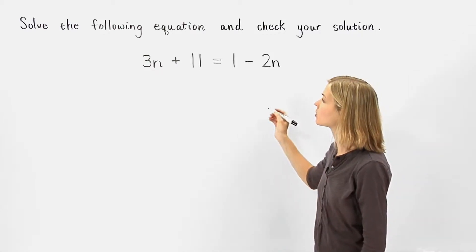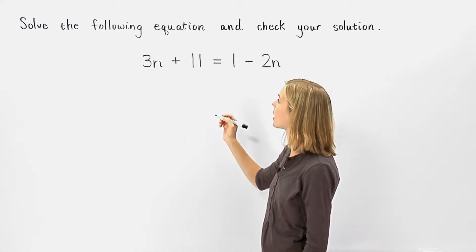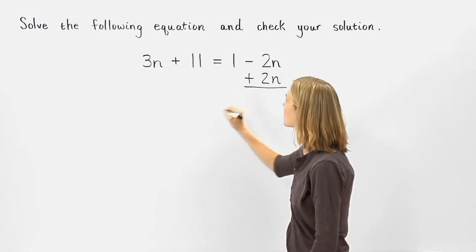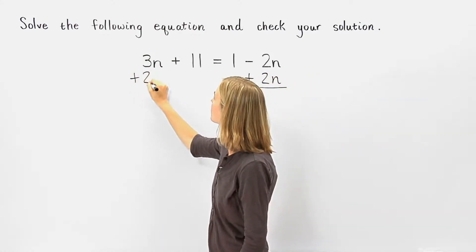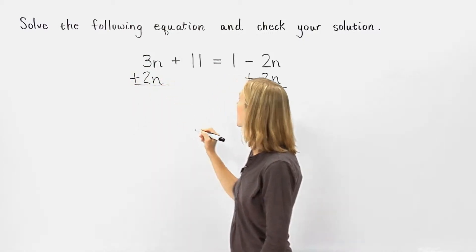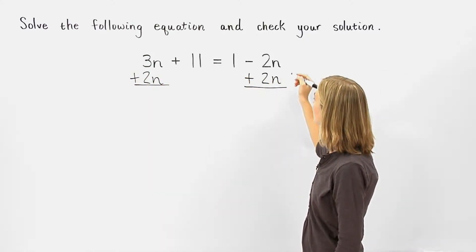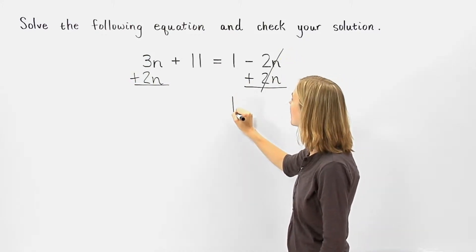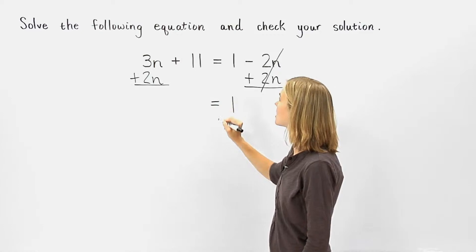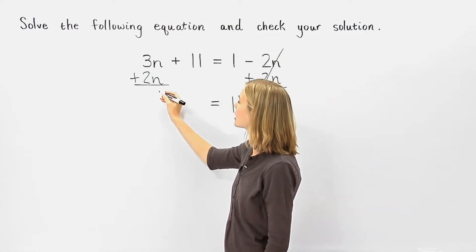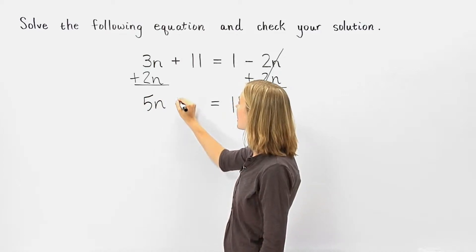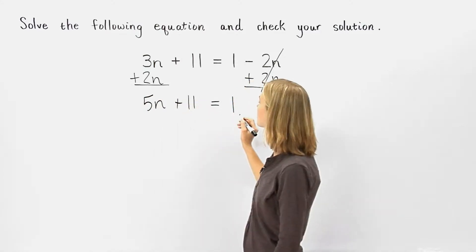So let's put our variables together on the left side of the equation by adding 2n to both sides of the equation. On the right side of the equation, the negative 2n and positive 2n cancel each other out and we have 1. And on the left side of the equation, 3n plus 2n is 5n, so we have 5n plus 11 equals 1.